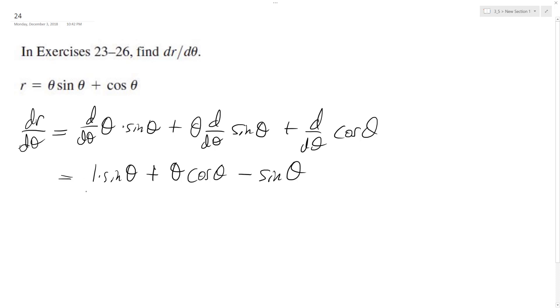Alright, so what we end up with is sin θ plus θ cos θ minus sin θ. The two sine thetas cancel out, and we're simply left with θ cos θ, and that's it.